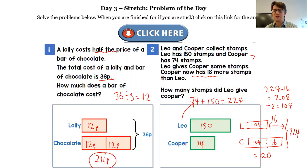Well, what have we gone from? So we've gone from Leo had 74 plus something has taken us to 120. So we can do 120 subtract 74, do my regrouping, gives me 46. So yes, in total Leo gave Cooper 46 stamps.